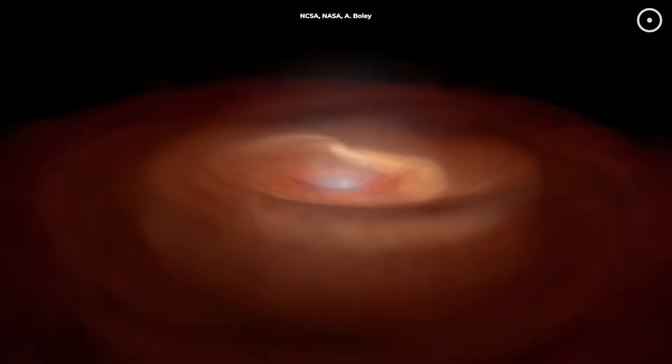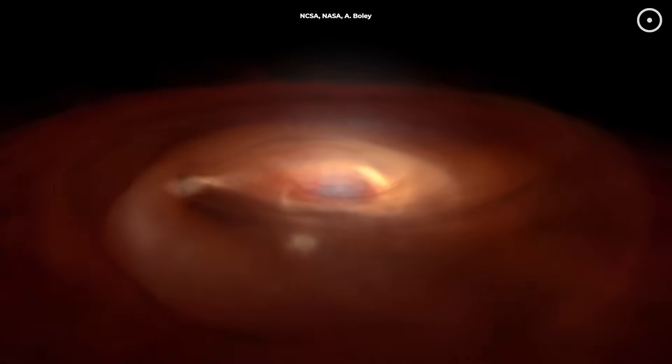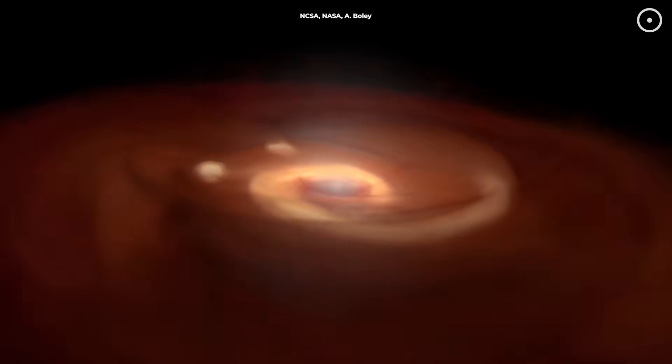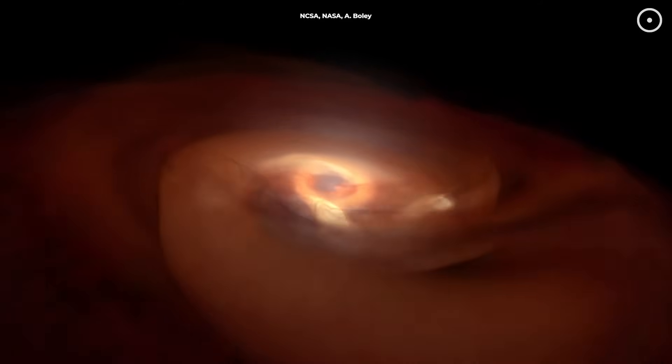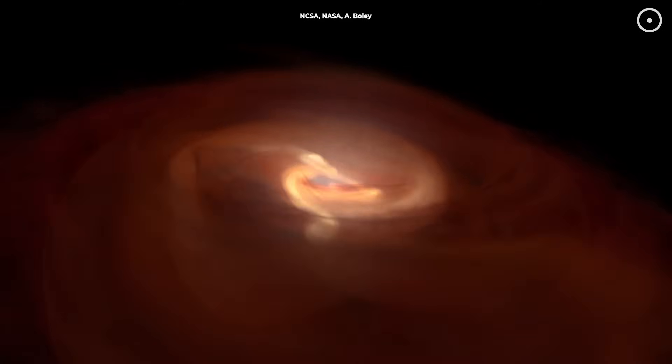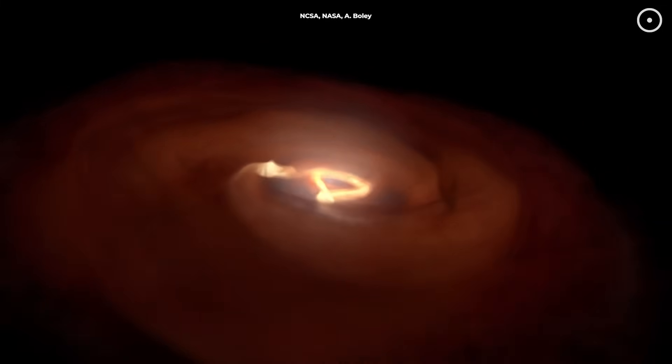We're talking about dust grains so tiny that a million of them could fit across a single millimeter. That's about the size of a single bacterium. These microscopic particles are the building blocks of entire worlds. Every rocky planet, including Earth, started out as nothing more than cosmic dust.